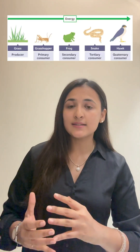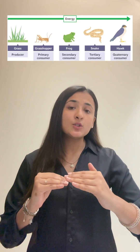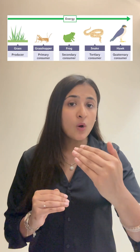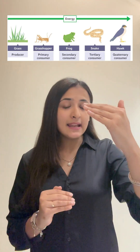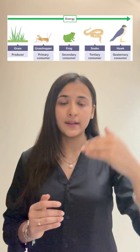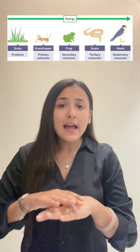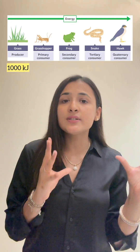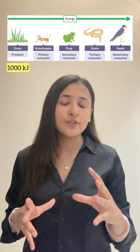Let us understand this with a very simple example. Let us take a very basic food chain — a food chain based on grass. Grass is consumed by grasshopper, grasshopper is consumed by frog, frog is consumed by snake, and snake is consumed by hawk. At the base level, grass has supposedly fixed 1000 kJ of energy from sunlight.